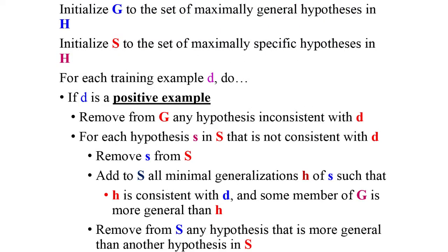The Candidate Elimination Algorithm uses two terms: G, representing the maximally general hypothesis, and S, representing the maximally specific hypothesis. H indicates the hypothesis space and d indicates the training examples. Step 1: Initialize G to the set of maximally general hypotheses in H, and initialize S to the set of maximally specific hypotheses in H.